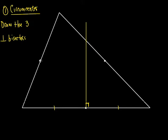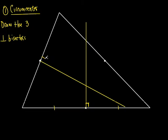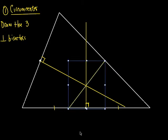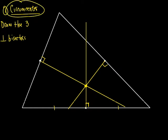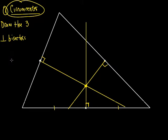Let's draw a perpendicular bisector on this side — I go through the midpoint and draw it so this line forms a right angle, a 90-degree angle. Now I'll do it one more time from here, going perpendicular. If I did these correctly, they should all go right through each other. See how they all intersect at one point? That one point is called the circumcenter. So that's important — it's called the circumcenter.